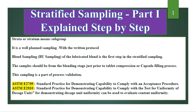After lubrication and just prior to compression, the stages of stratified sampling start. The first step is BU sampling. The sample should be taken from the blending stage just prior to tablet compression or capsule filling process. Stratified sampling is a part of process validation. There are two guidelines used for uniformity of dosage units and content uniformity, that is BU and CU.